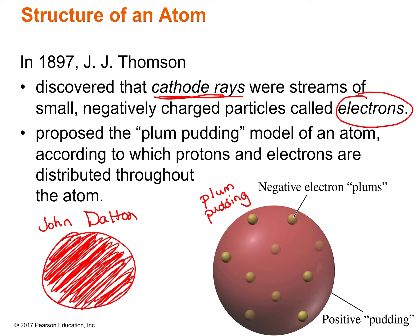His plum pudding model said there are these little negative electrons that have to go in the atom. He spread them out in the atom every so often. We know that the atom is neutral, so if there are these negatively charged pieces, then there's got to be something positively charged. He spread out little negatively charged plums, and the pudding — the rest of it — is positively charged so that the atom is still neutral. You could also think of this as a chocolate chip cookie model: the electrons would be the chips, and the cookie part would be the positive pudding.